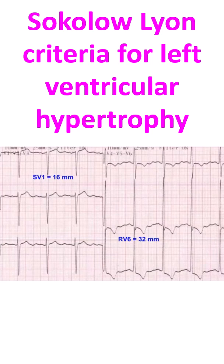Or R-Wave in V5 or V6 should be more than 2.6 mV or 26 millimeters on standard ECG. This is based on the fact that left ventricular activity is represented by the R-Wave in the left oriented leads and S-Wave in the right oriented leads. Left ventricular activation proceeds in a direction away from the right oriented leads and towards the left oriented leads.